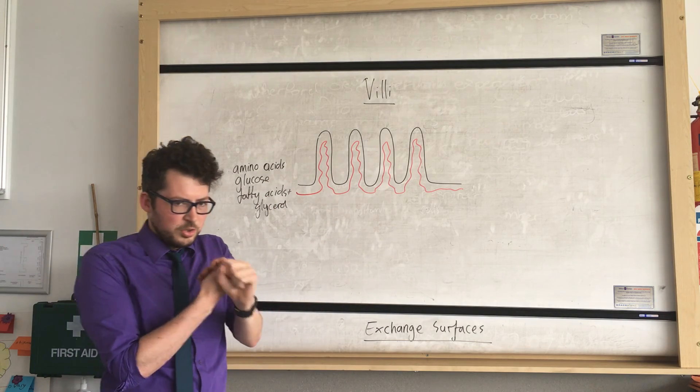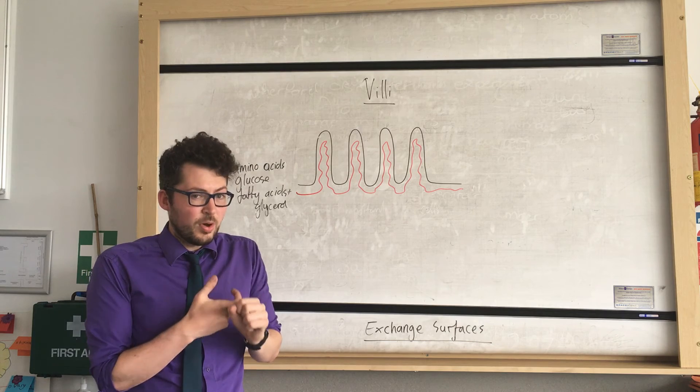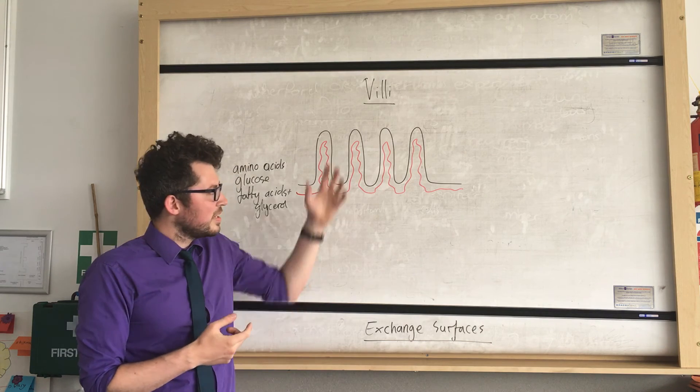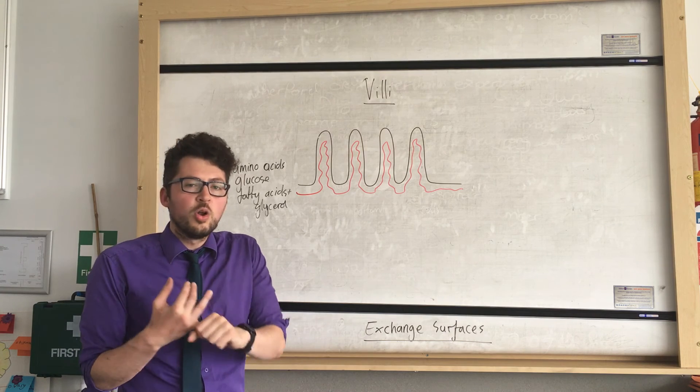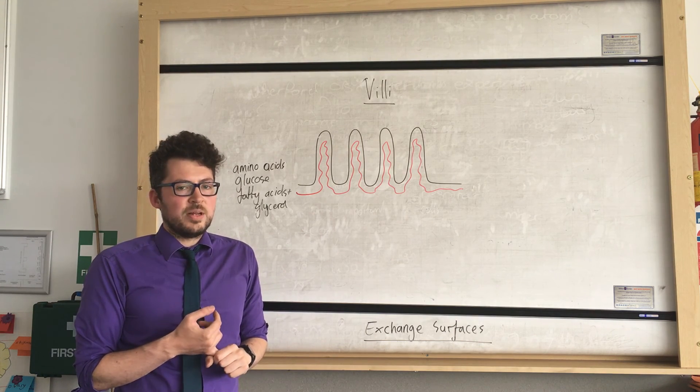So it happens by diffusion, but it's also important you know that active transport happens in the gut, in the villi of the small intestine, to allow us to absorb all of those products of digestion into our bloodstream.